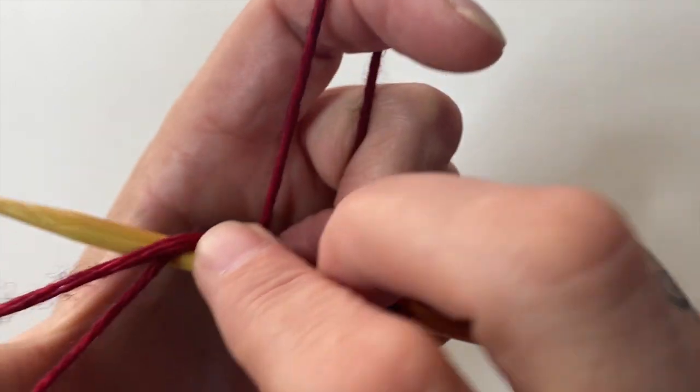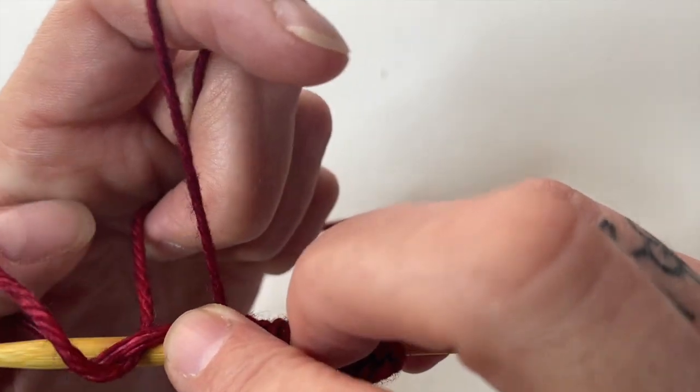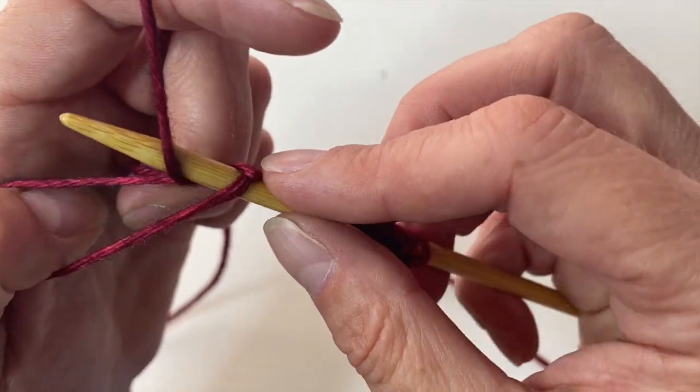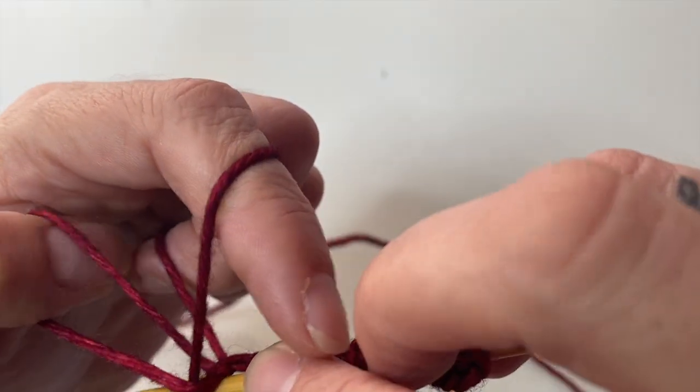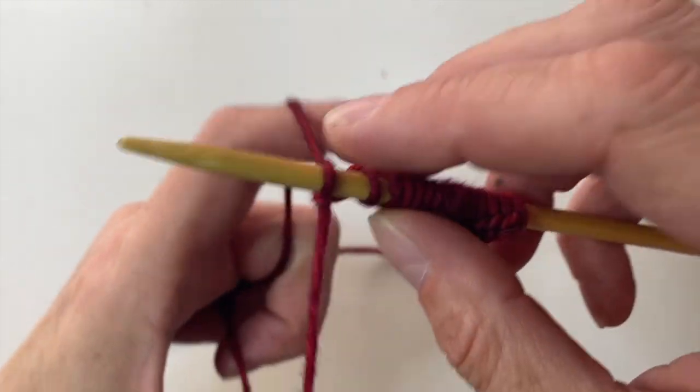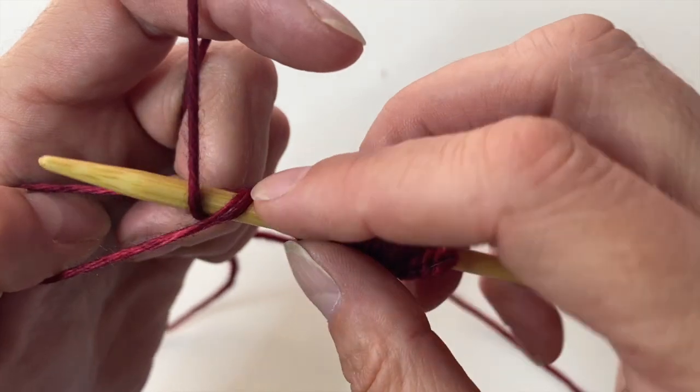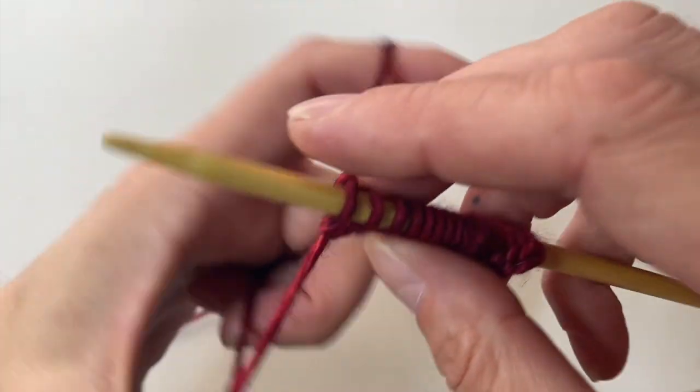So under both strands from your thumb, through the hole, bending your thumb, making the hole nice and big, scooping the strand off of your index finger, bringing the tip of the needle through the hole, and tightening it down. Under both, through the hole, around from your index, back through the window, tighten.